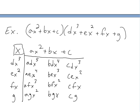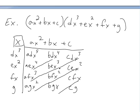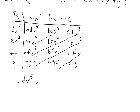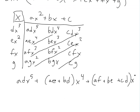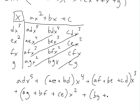Now you just add up the terms with matching powers of x — and you can see they always fall on diagonals. So you add up the diagonals: ADx⁵ plus (AE+BD)x⁴ plus (AF+BE+CD)x³ plus (AG+BF+CE)x² plus (BG+CF)x plus CG. This is our complete foiling, and the diagonal pattern makes it easy to organize.